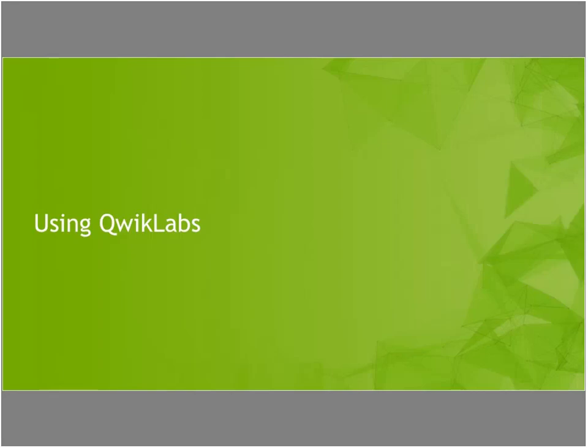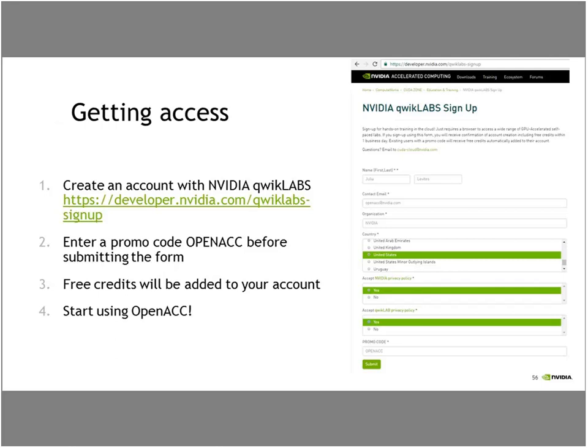Before we switch to the Q&A session, I want to introduce you to our QuickLabs service. NVIDIA has online training available, and as part of this course you're given credits to take online labs. Go to the site off of developer.nvidia.com, sign up for a QuickLabs account, and use the promo code 'openACC' to receive credits — enough for all our OpenACC labs. If you've done this before and the coupon doesn't work because your email is already in the system, please email openACC@NVIDIA.com and we'll add additional credits to your account.